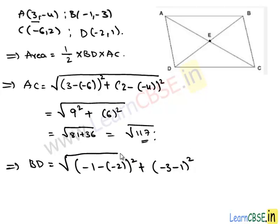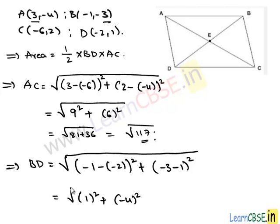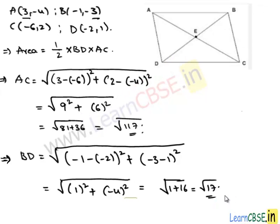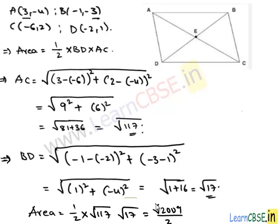For diagonal BD, with B(−1, −3) and D(−2, 1): BD = √((−1−(−2))² + (−3−1)²) = √(1² + (−4)²) = √(1 + 16) = √17. Therefore, area of parallelogram ABCD = (1/2) × √117 × √17 = (1/2) × √(117 × 17) = √(1989)/2 square units.